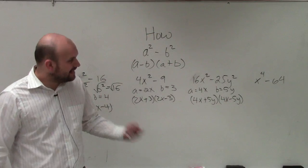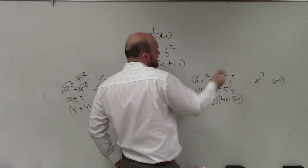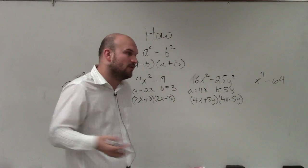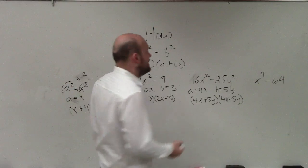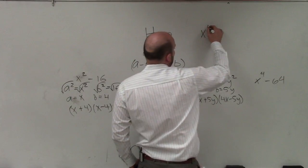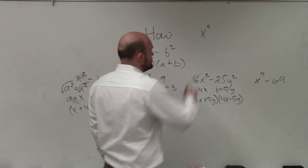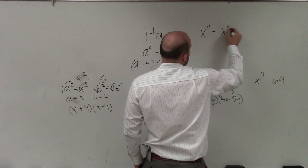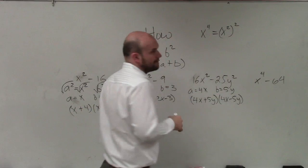All right, the last one. This one gets a little bit of students confused. But again, what we want to do is be able to write x to the fourth as a squared number. A lot of times what we can do is use the power of exponents. So I could say x to the fourth is the same thing as x squared squared, right?